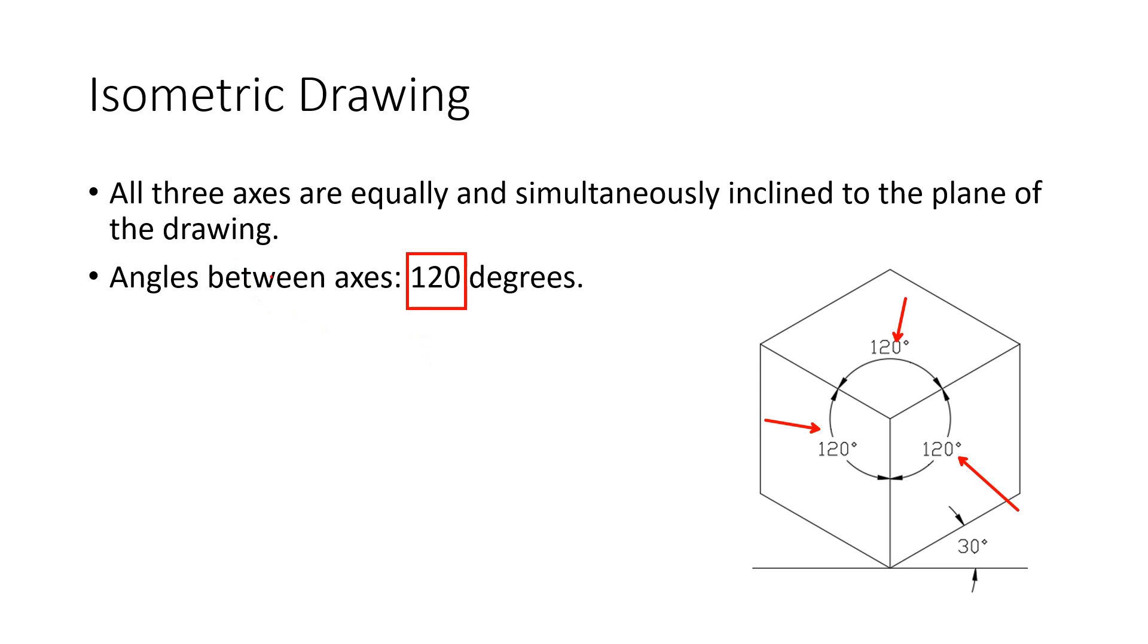Isometric drawings are widely used in engineering and technical drawings because they provide a clear representation of the object's three-dimensional form.